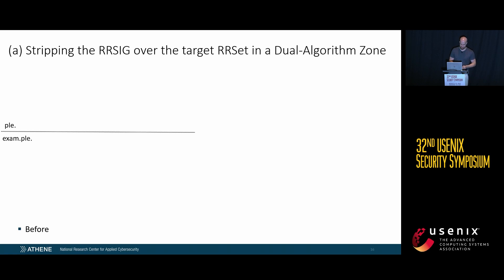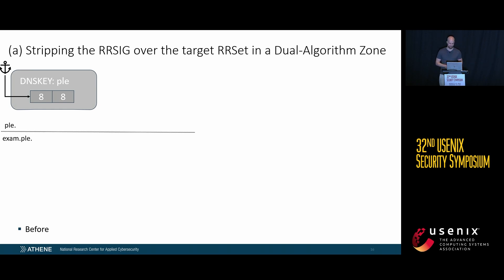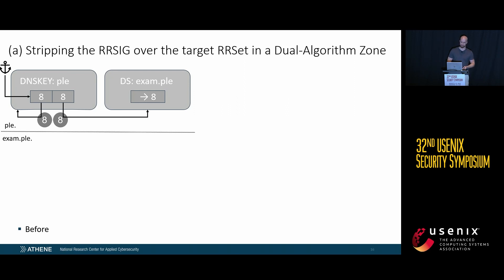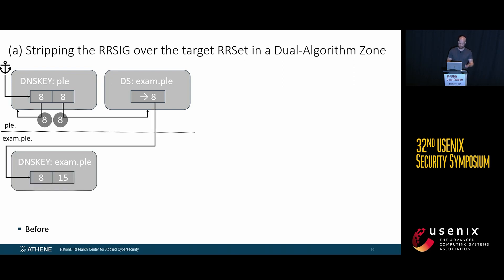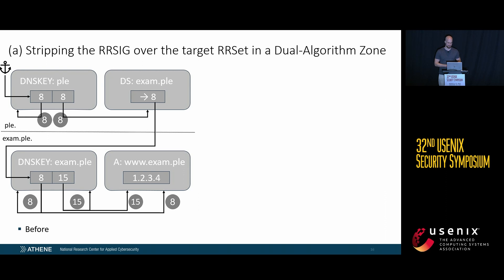In a chain of trust, we have a parent zone and a child zone. The trust anchor — either a digest or a copy of a DNSSEC record, usually of the root zone — is the starting point. The DNSKEY record carries the public key material used for signature validation. Signatures are carried in RRSIG records and authenticate the zone data. DS records contain a digest of the DNSKEY of the child domain, thereby linking to it and allowing us to construct a chain of trust to the target records.